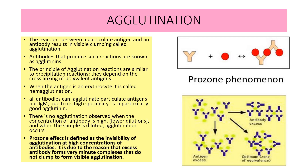In this diagram, you can see the antibodies marked by blue color and antigen marked by green color. When the antigen is in excess, there is no agglutination. Even when the antibodies are in excess, again there is no agglutination. Agglutination occurs when the optimum zone is there, that is the zone of equivalence.